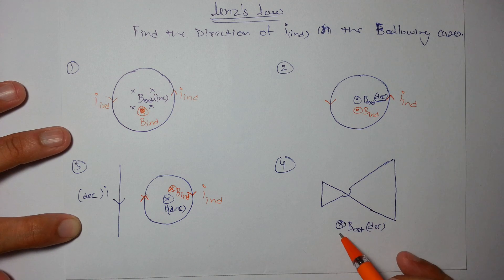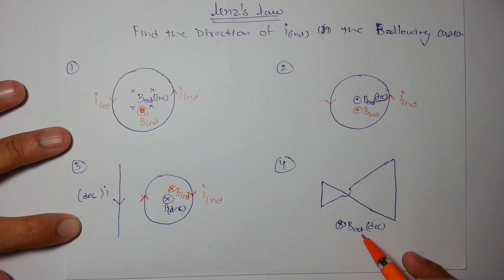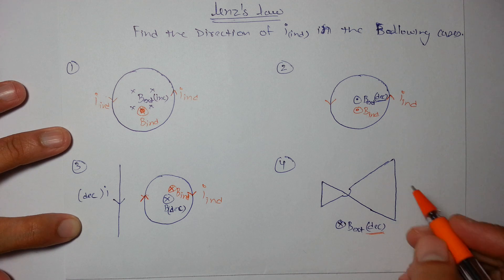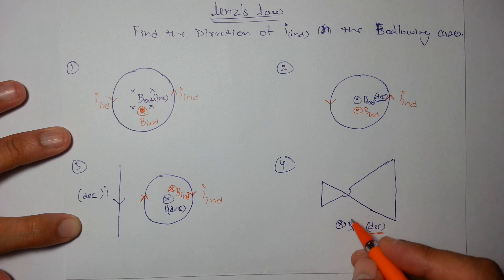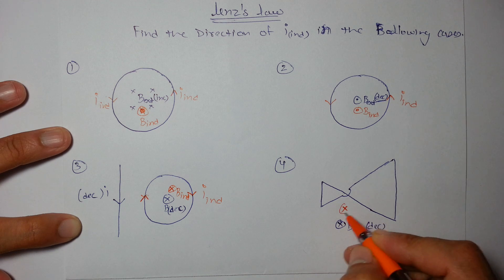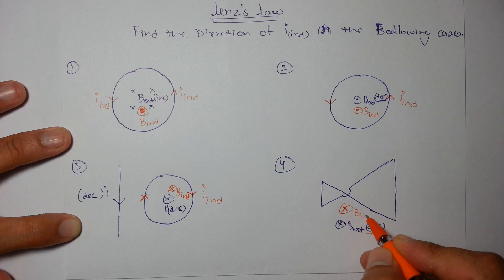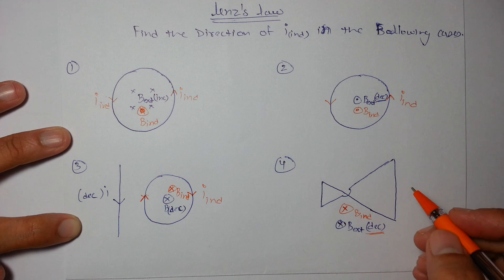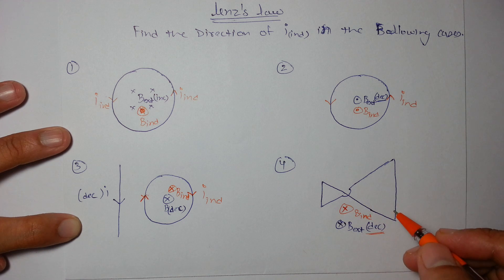For this example, the external B is into the plane of paper but decreasing, so the induced B will also be into the plane of paper to oppose this decrease.